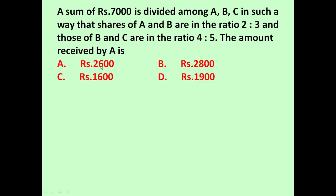The amount received by A is? Four options are given. To solve such types of problems, if we see the ratio of A:B is given as 2:3 and ratio of B:C is given as 4:5.